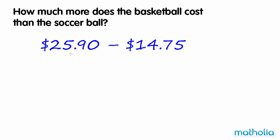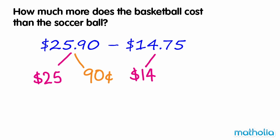Let's separate the amounts into dollars and cents. $25.90 is equal to $25 and $0.90. $14.75 is equal to $14 and $0.75. Start by subtracting the dollars: $25 minus $14 is $11.